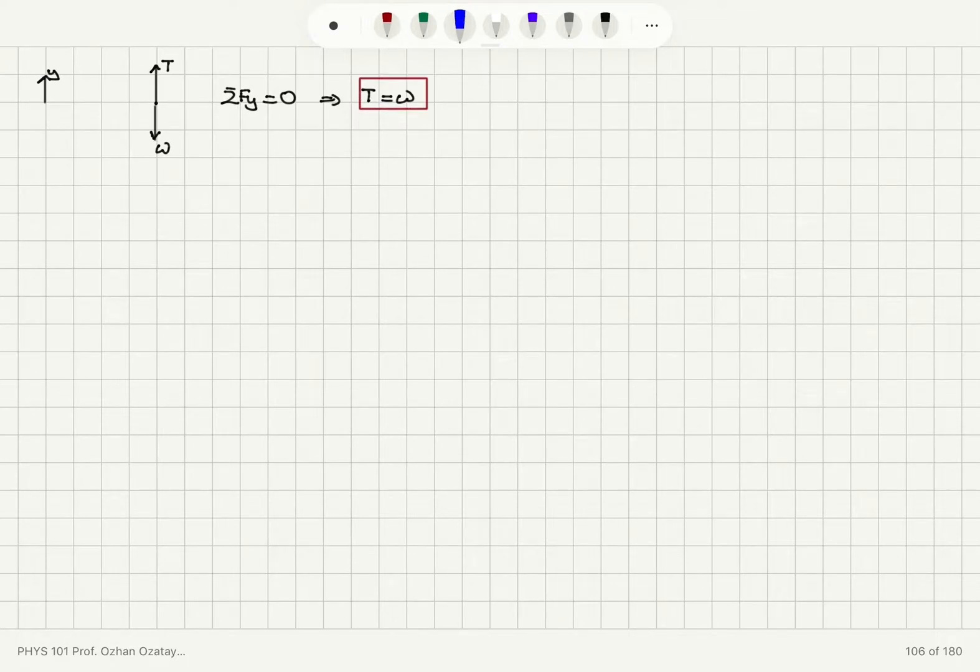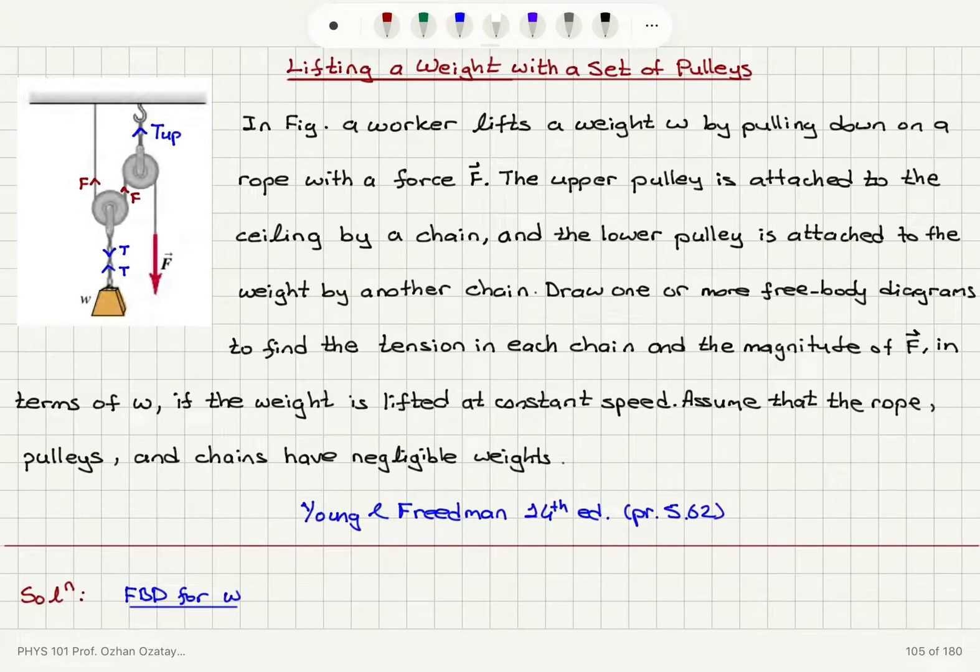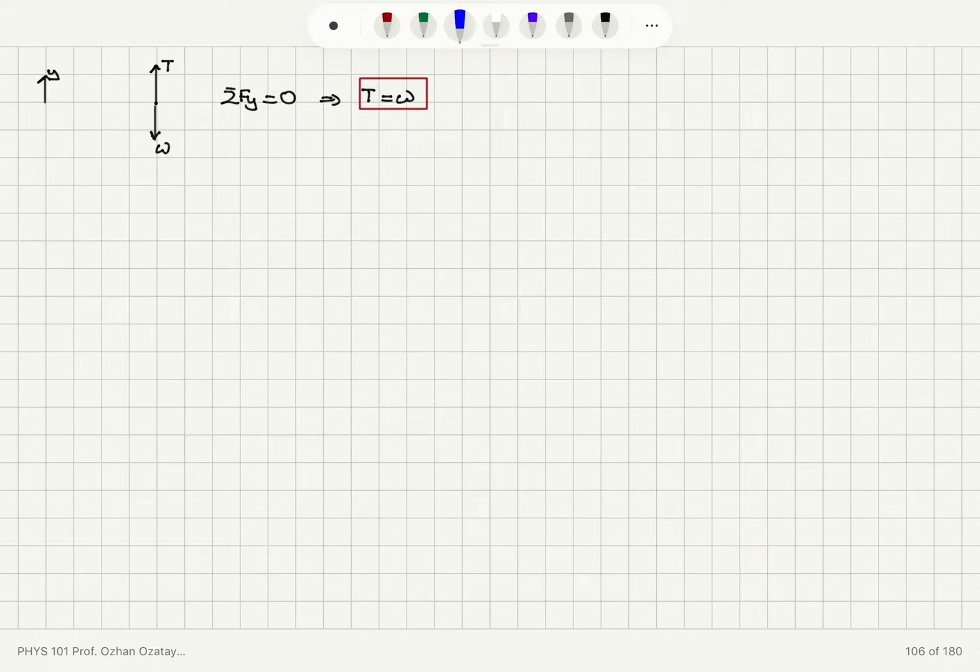Now we can draw a free body diagram for the lower pulley here. Because we have this F being applied on the string, it's the same string that is going under this lower pulley. So we will have the same force F acting there as well.